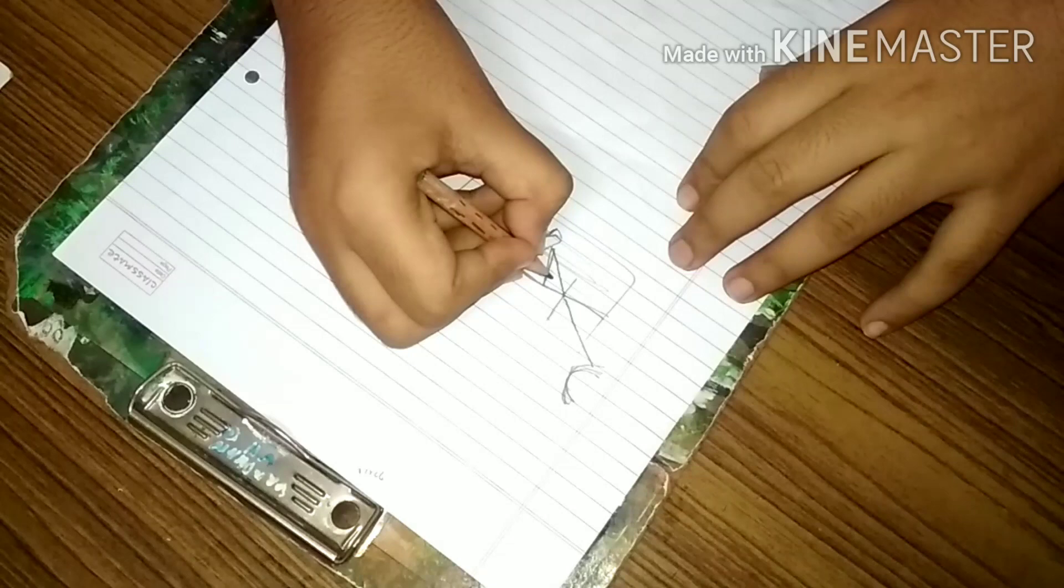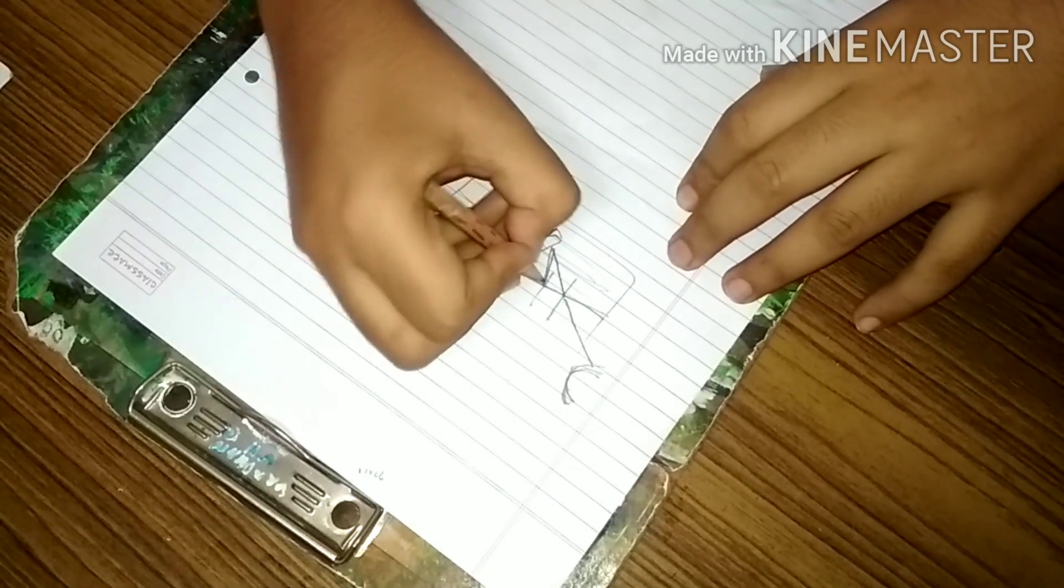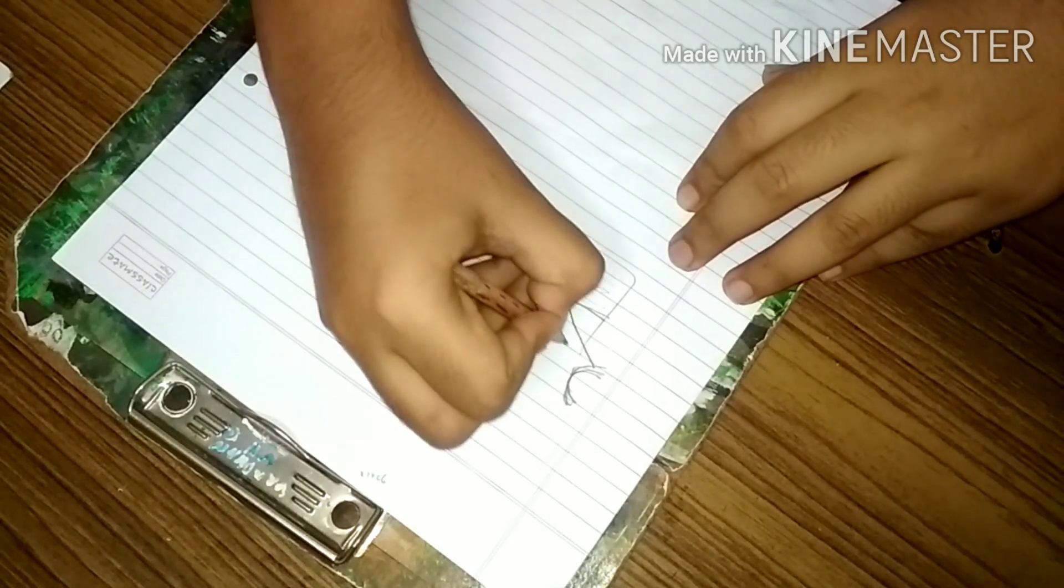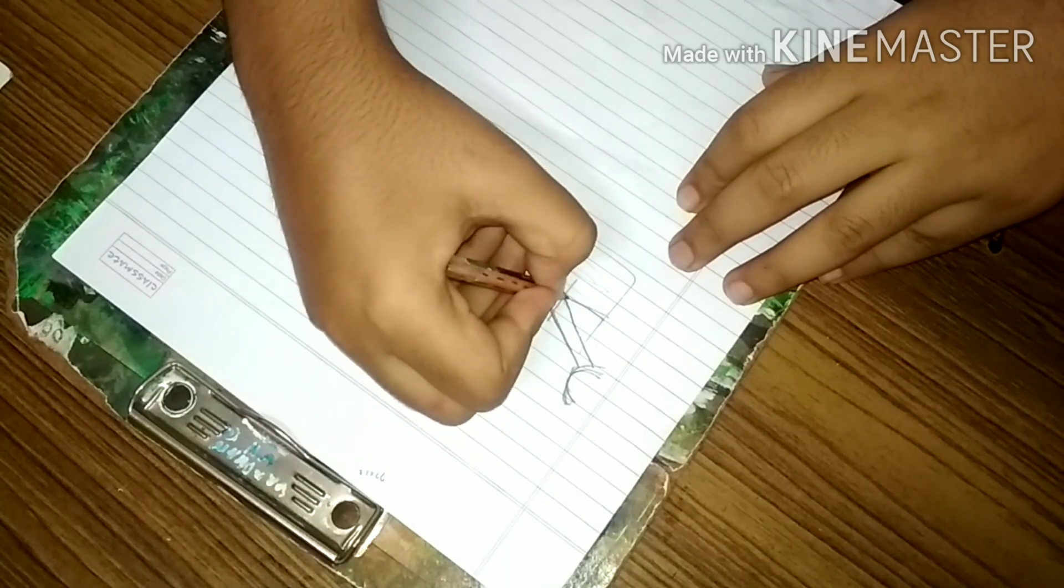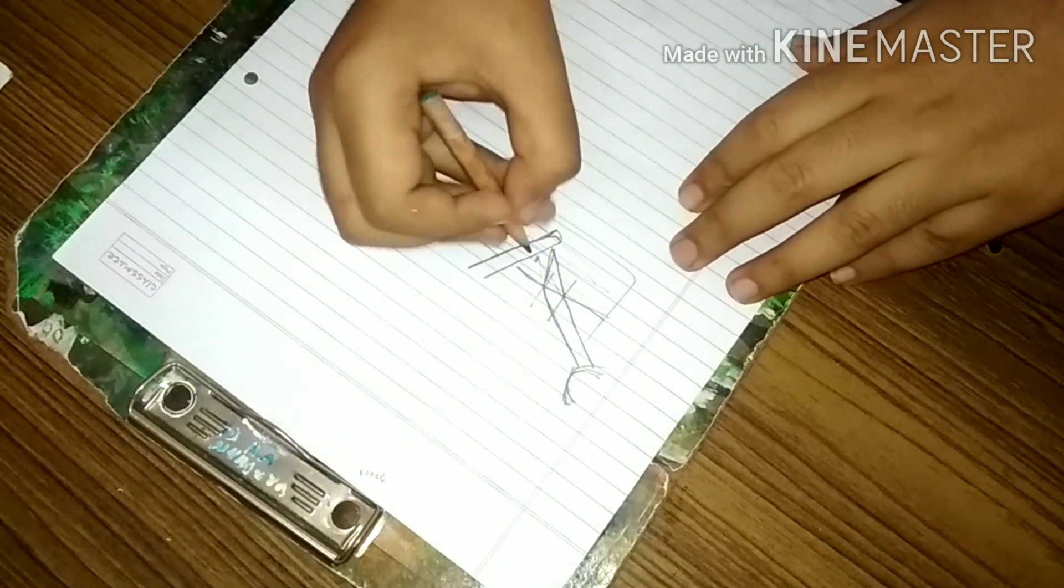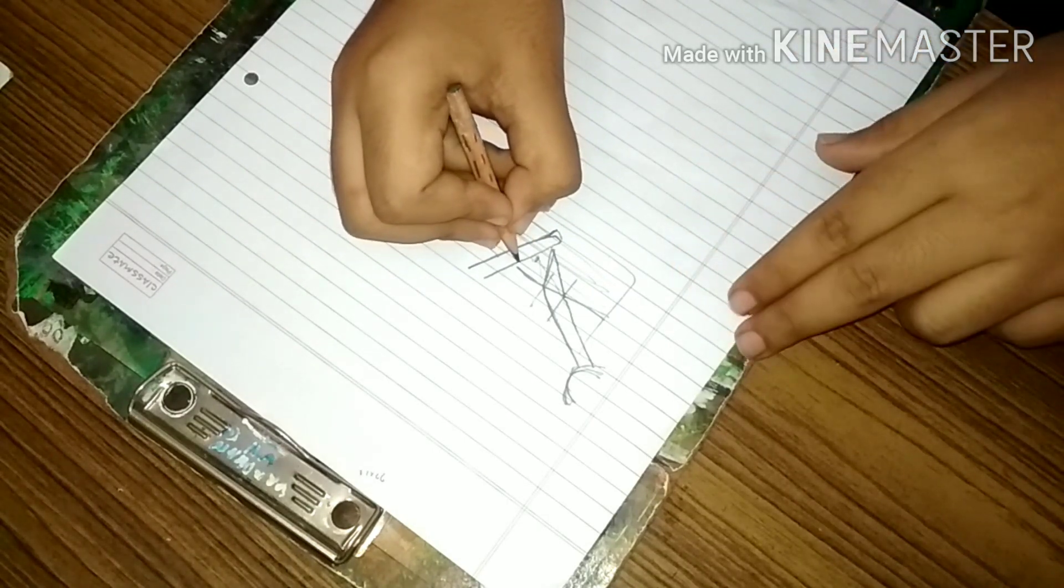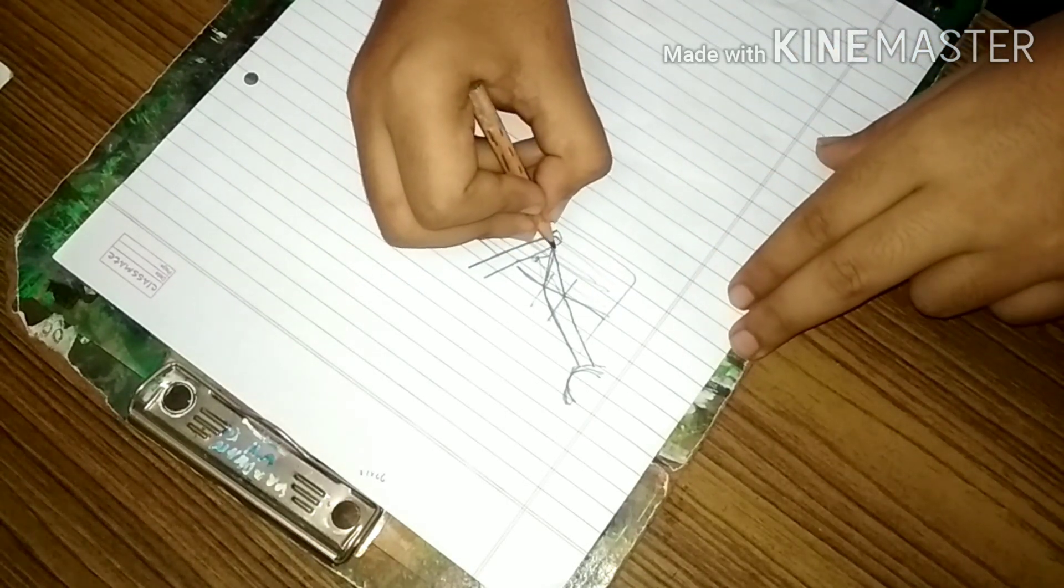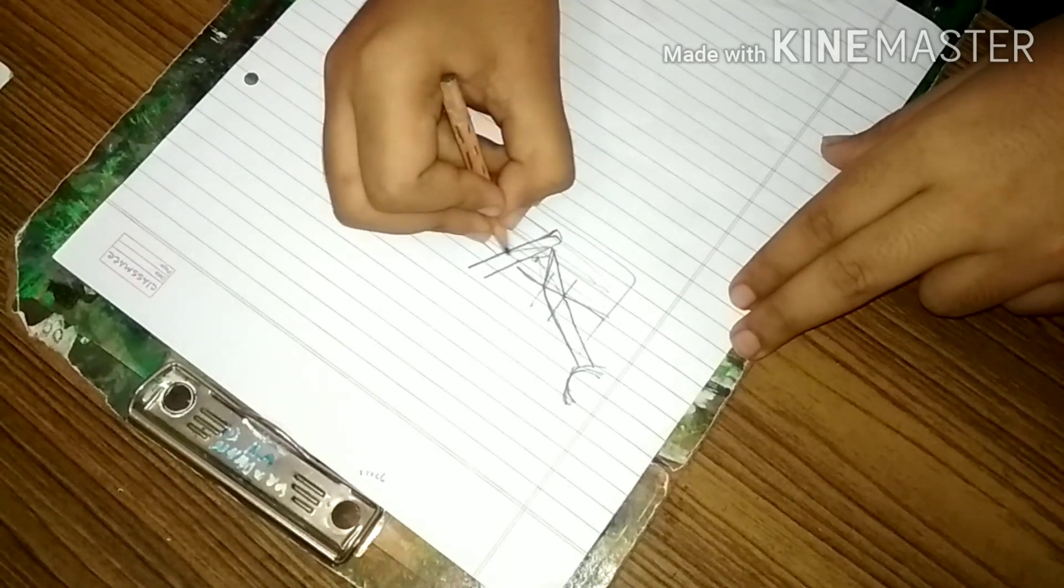And if you take one more ray like this and again do a normal, so it will bend somewhat like this. So if you extend these lines, you will get them intersected at this point. So the observer's eyes will detect the pencil somewhat like this.